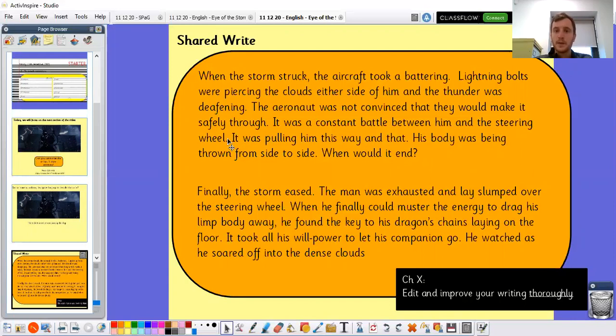So I've started from the beginning of the storm. So I've written, when the storm struck, the aircraft took a battering. Lightning bolts were piercing the clouds either side of him and the thunder was deafening. I use that word deafening to make it seem like it's very loud, very vicious, maybe even a little bit frightening. The aeronaut was not convinced they would make it safely through. So I've tried to think about the aeronaut's feelings here, how he's feeling, maybe some of the doubts that he's having.